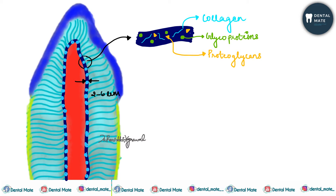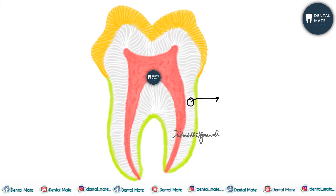Pre-dentine is a pale staining dentine with a different matrix composition compared to mineralized dentine. The collagen fibers undergo mineralization at the pre-dentine–dentine junction, and after that, a new layer of pre-dentine is formed circumpulpally.